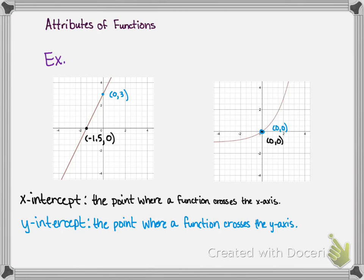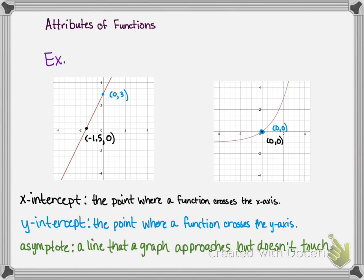Another attribute we'll look at is an asymptote. An asymptote is a line that a graph approaches but doesn't actually touch. At the beginning of this year we'll look mostly at functions that have vertical or horizontal asymptotes. But later in the year we'll see that asymptotes can also be oblique or slanted as well.